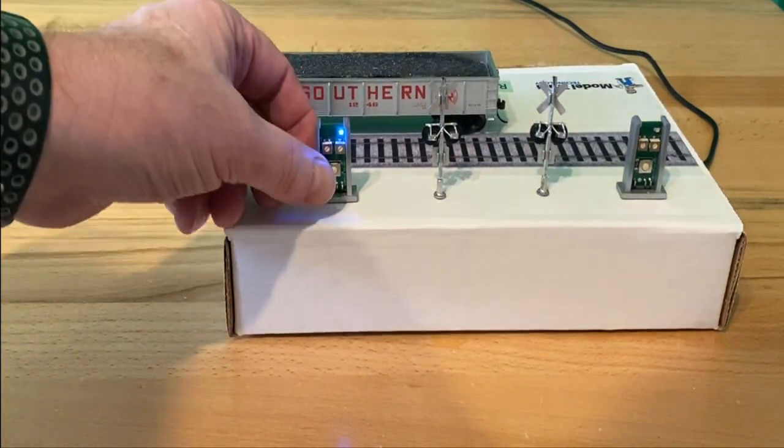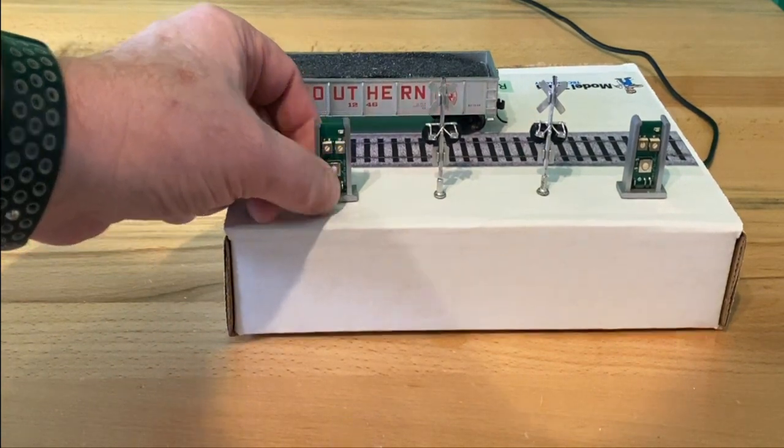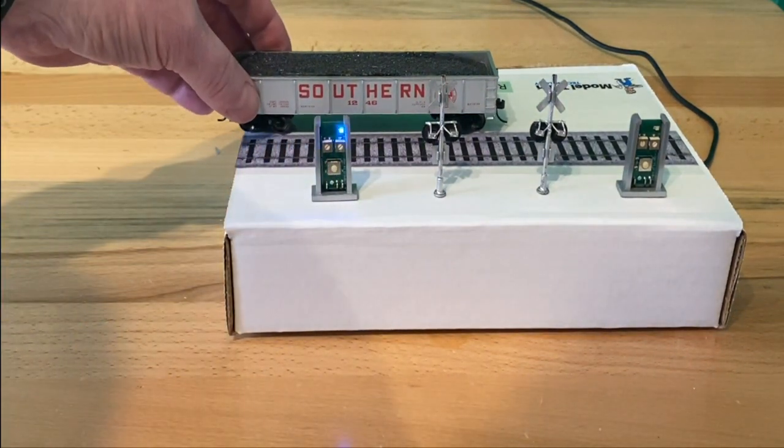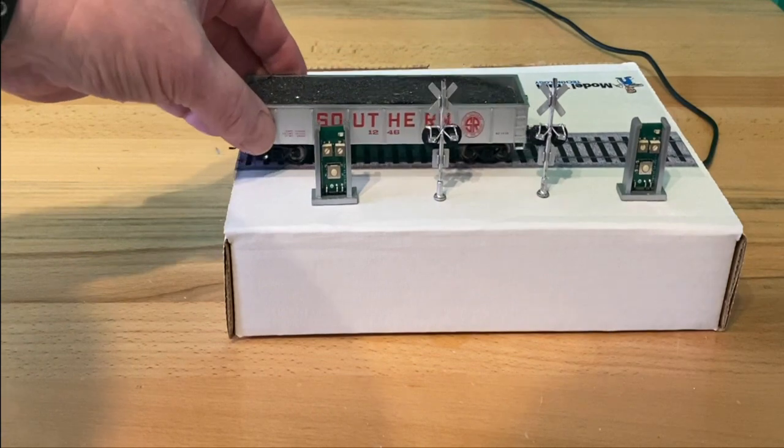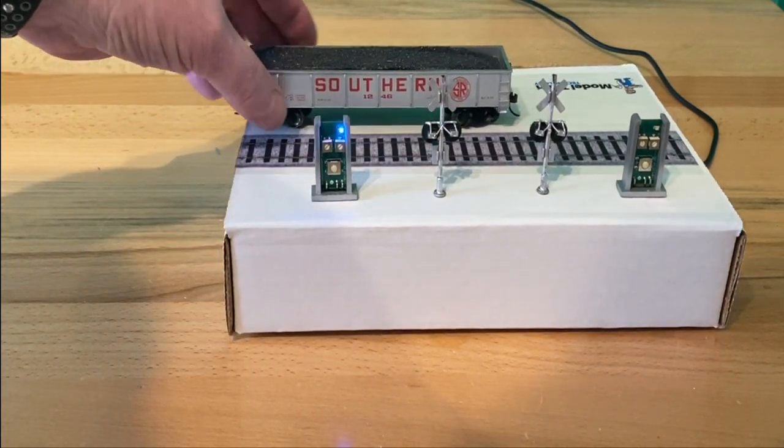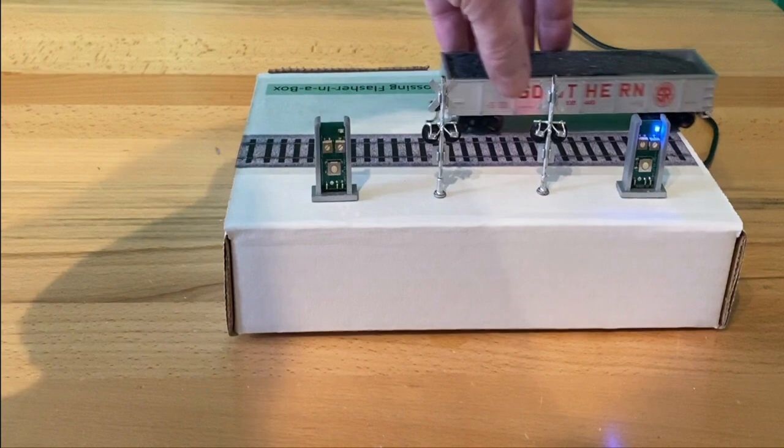And we can even set it to the zone range, two push buttons. So no train will be detected here, but the train out on the second track gets picked up.